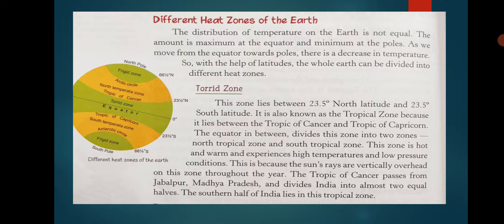Temperate zone means moderate — neither very hot nor very cold. The areas lying between the Tropic of Cancer and the Arctic Circle in the northern hemisphere, and between the Tropic of Capricorn and the Antarctic Circle in the southern hemisphere, are the two temperate zones. Here the sun rays are always slanting, resulting in a moderate climate — not very hot and not very cold.